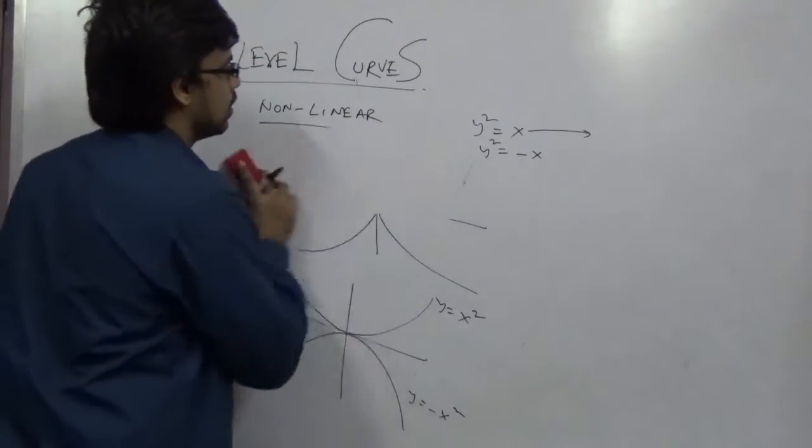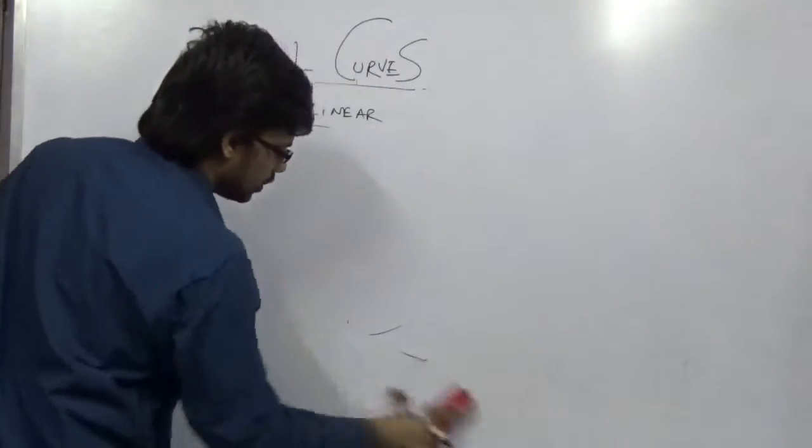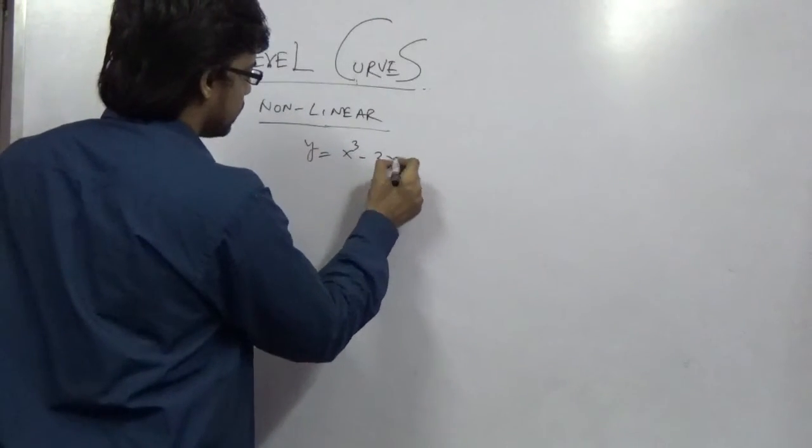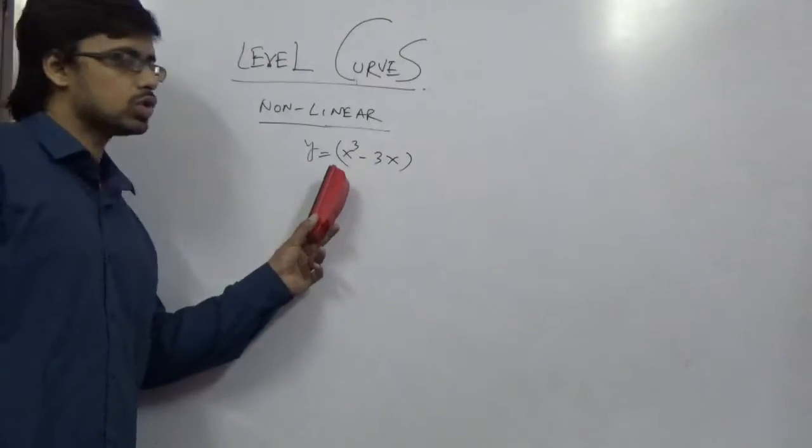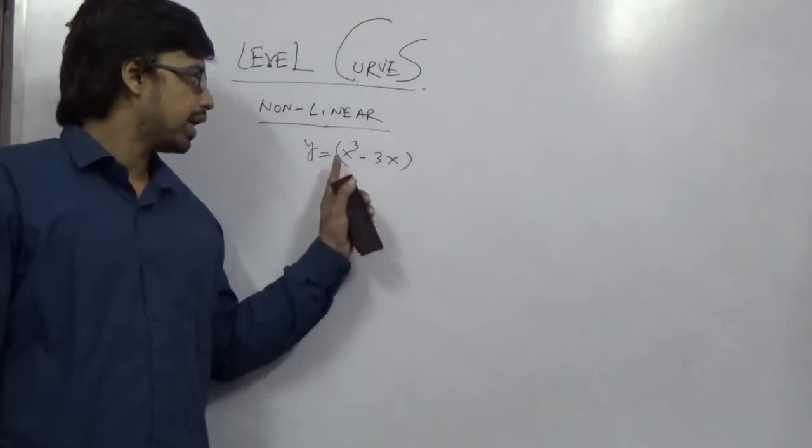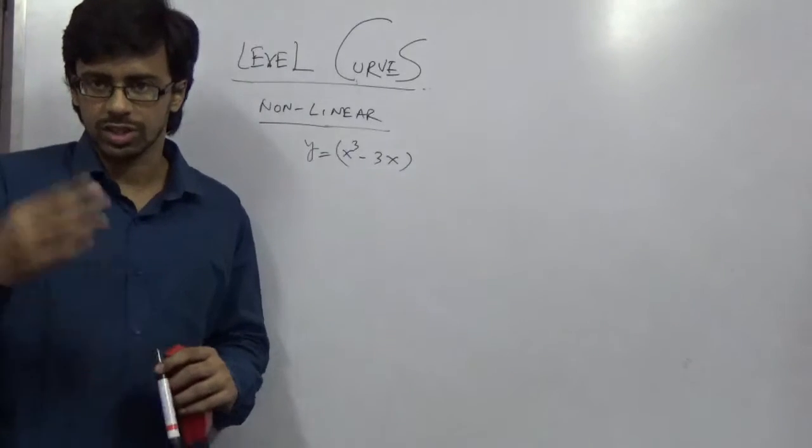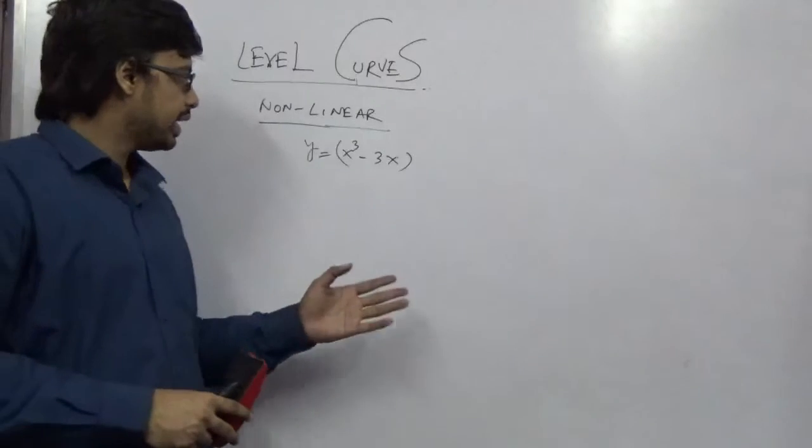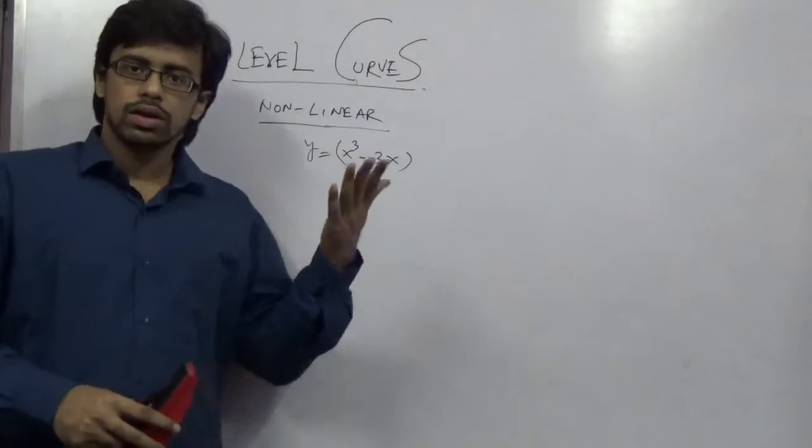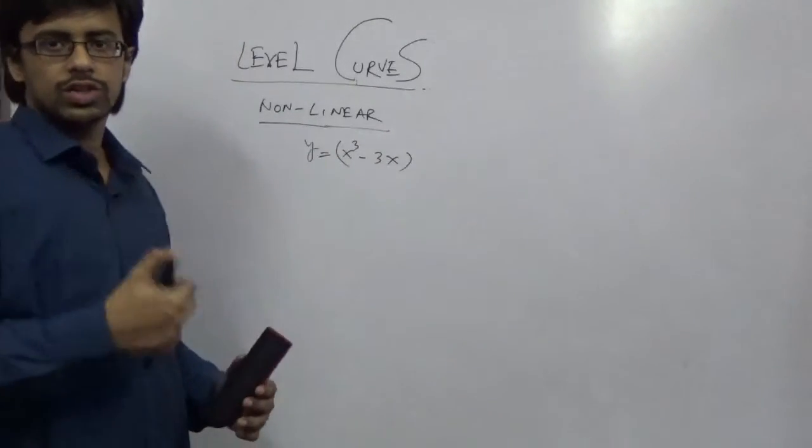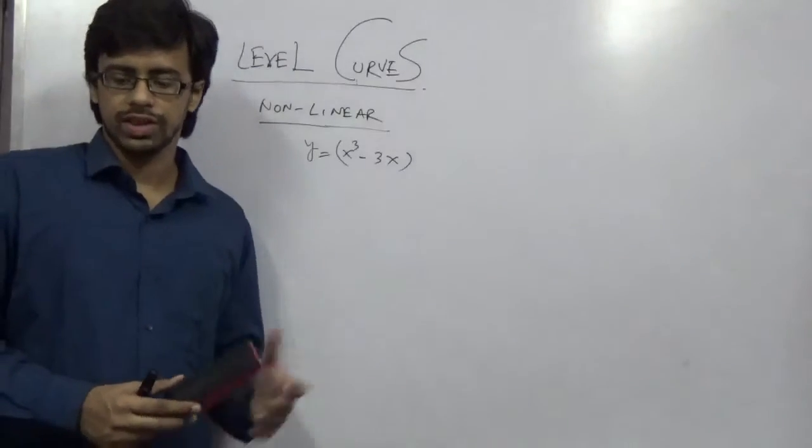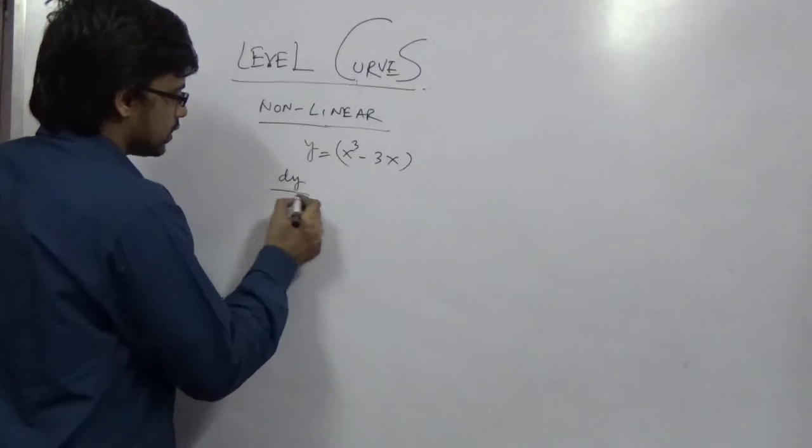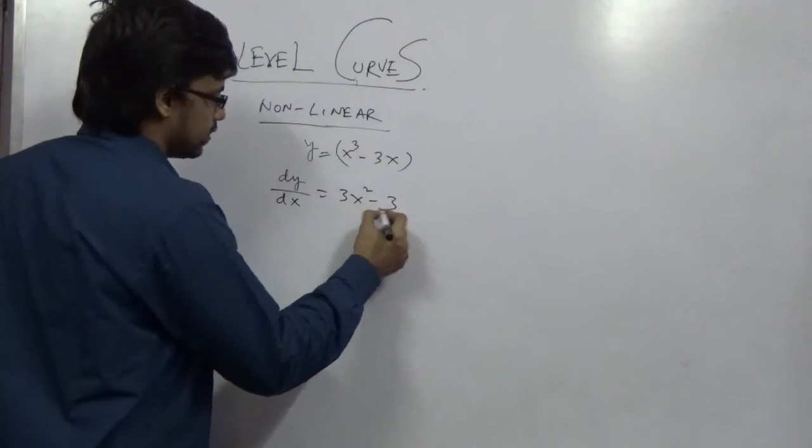Next part is non-linear with a cubic part. For example y equal to x cube minus 3x. You see it is called cubic because of the highest power. The highest power decides whether it is cubic. If the highest power is 2 it is called quadratic. If the highest power is 1 it is called linear. Now I have to draw this one. So I am giving a quick look on this. First you need to differentiate that is 3x square minus 3.